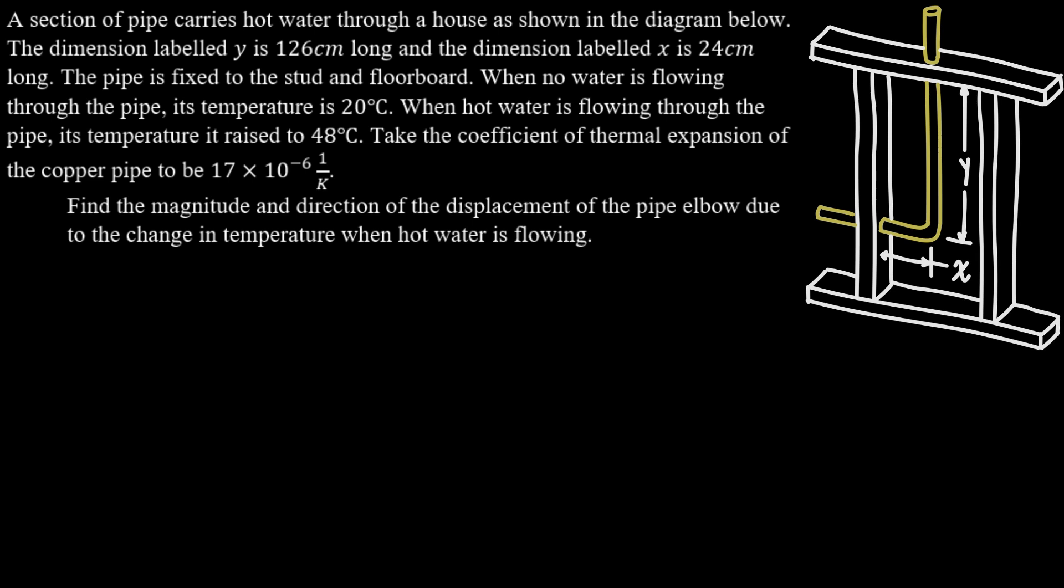Take the coefficient of thermal expansion of the copper pipe to be 17 × 10^-6, and the units for that are 1 over Kelvin or 1 over degrees Celsius. So since we're working with change in temperature here, that unit could either be 1 over Kelvin or 1 over degrees Celsius.